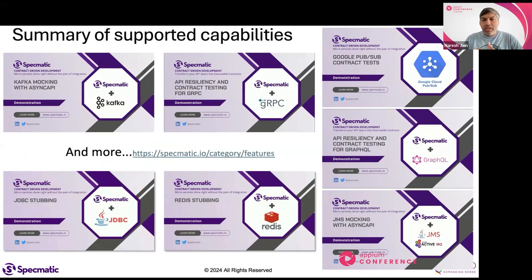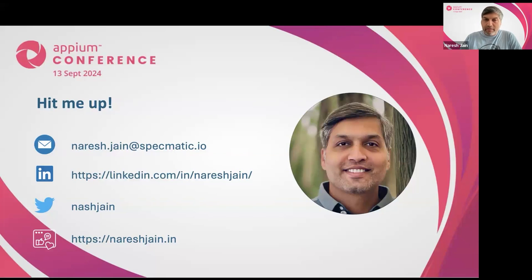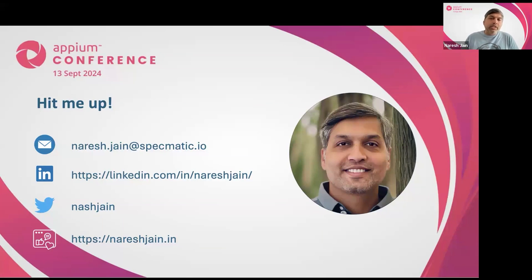Throughout the day people have been asking: will this work with gRPC? Will this work for Kafka? Will this work for Redis? Or I have a database and want to stub it out using JDBC. All of these capabilities are available; there are videos available you can check out. I think I've given a quick view of how contract-driven development is a key practice in addressing compatibility issues and ensuring seamless upgrades for your users. With that, I'll stop screen sharing and take some questions.